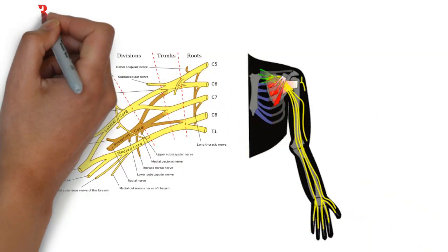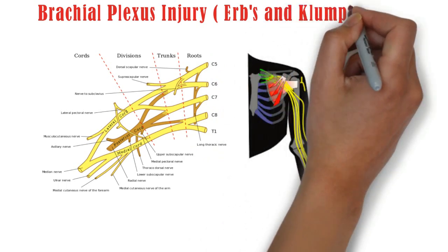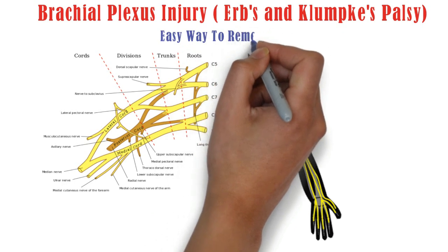In this video we'll discuss brachial plexus injury, Erb's and Klumpke's palsy, and easy ways to remember them.